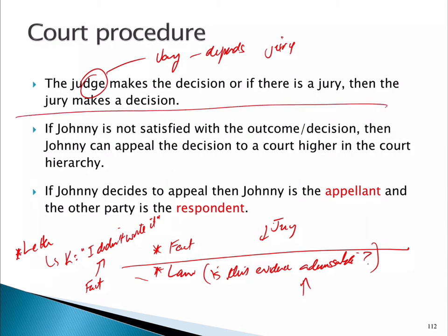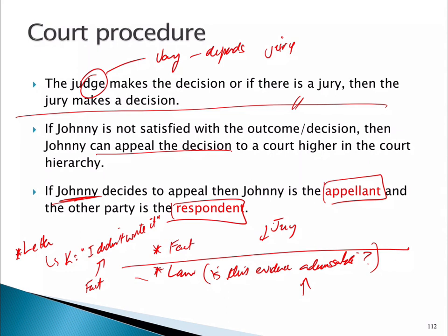If one of the parties isn't happy with the decision, they can appeal to a higher court in the hierarchy. That provides a method of review, which is necessary for natural justice. If Johnny or Kate is dissatisfied, either can appeal the decision. The person who appeals becomes called the appellant, and the other party is called the respondent. The appellant is bringing the case, so in a civil matter they must establish their case on the balance of probabilities, while the respondent responds to the appeal.